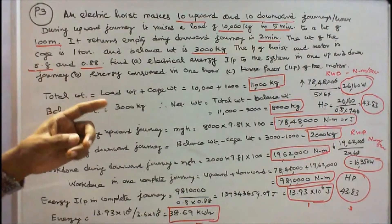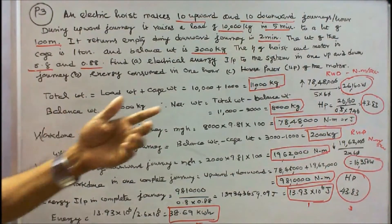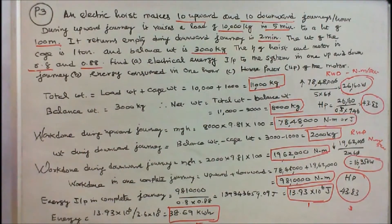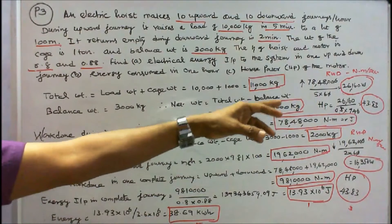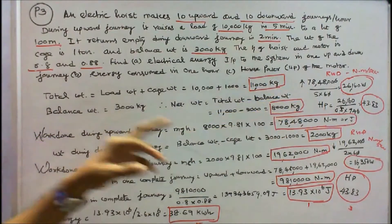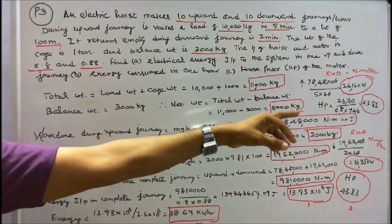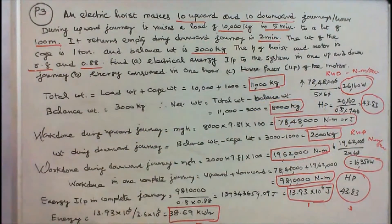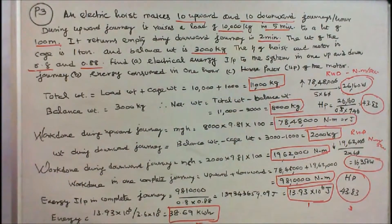The upward journey rate of work done is more, so we find shaft power of the motor for the upward journey. Shaft power of the motor is equal to 26,160 divided by hoist efficiency 0.8, divided by 746, that is equal to 43.83 HP. Shaft power of the motor is 43.83 HP.